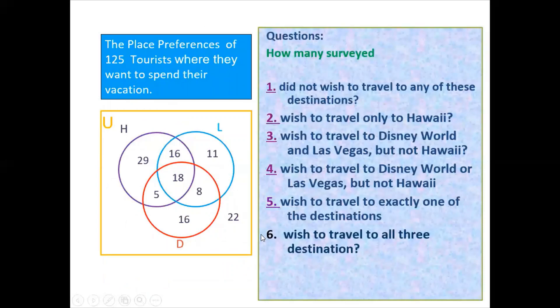The last question: How many surveyed wish to travel to all three destinations? That is given — the answer is 18.